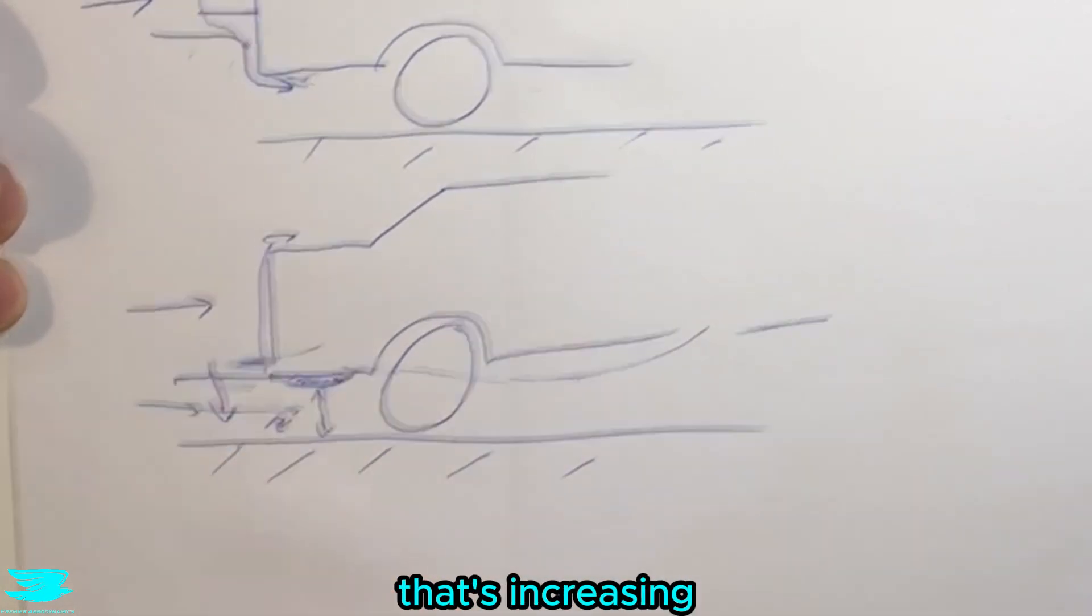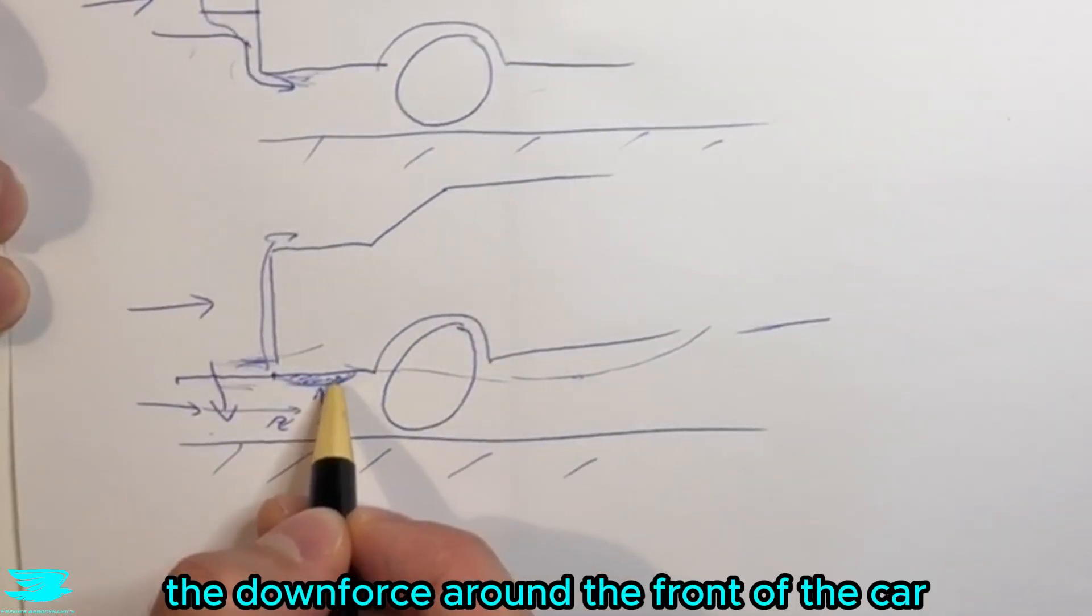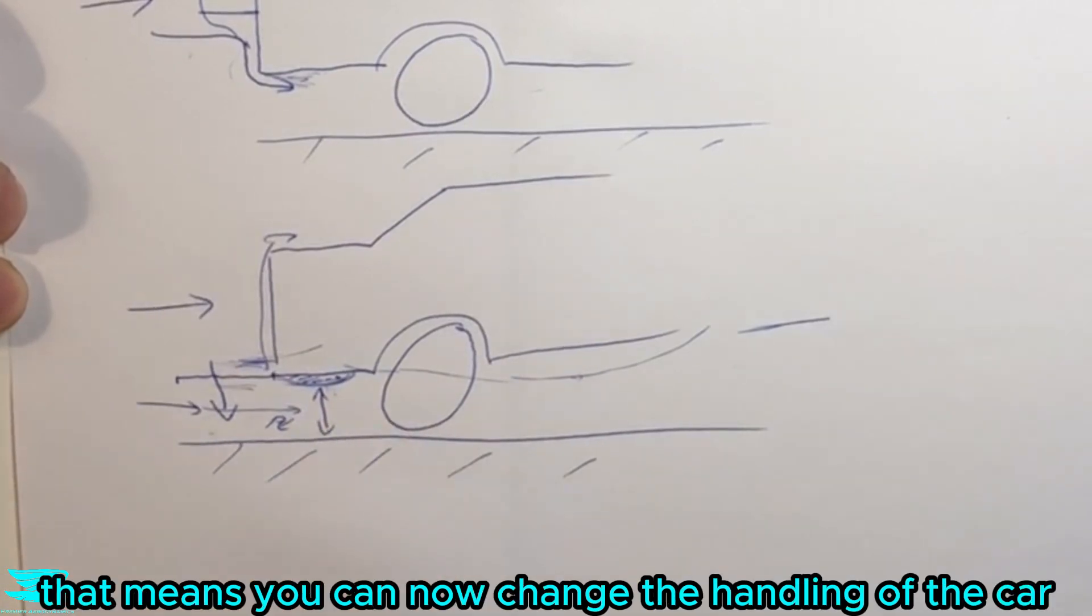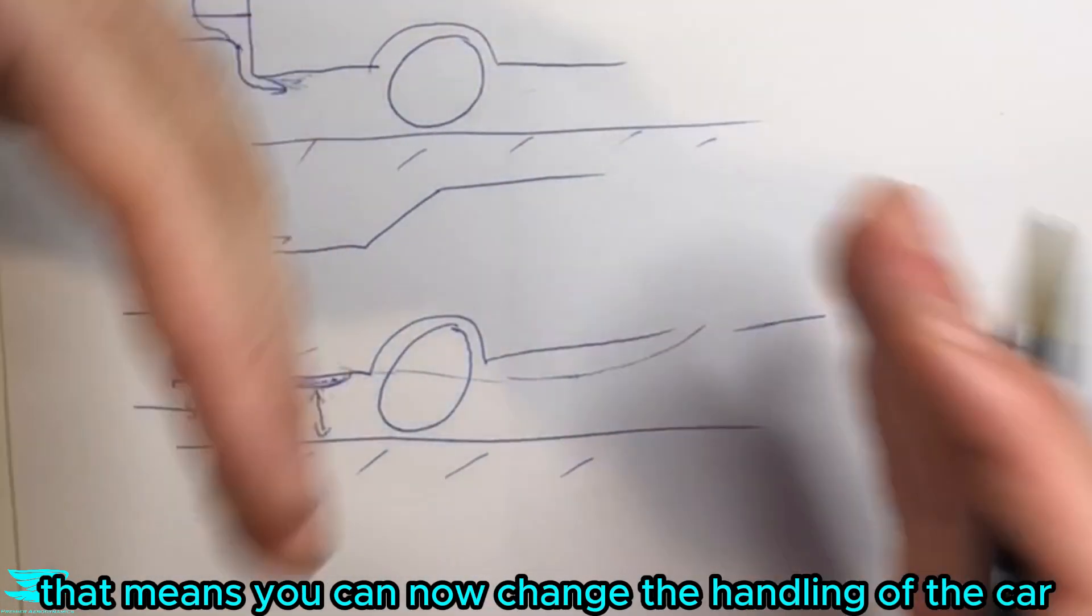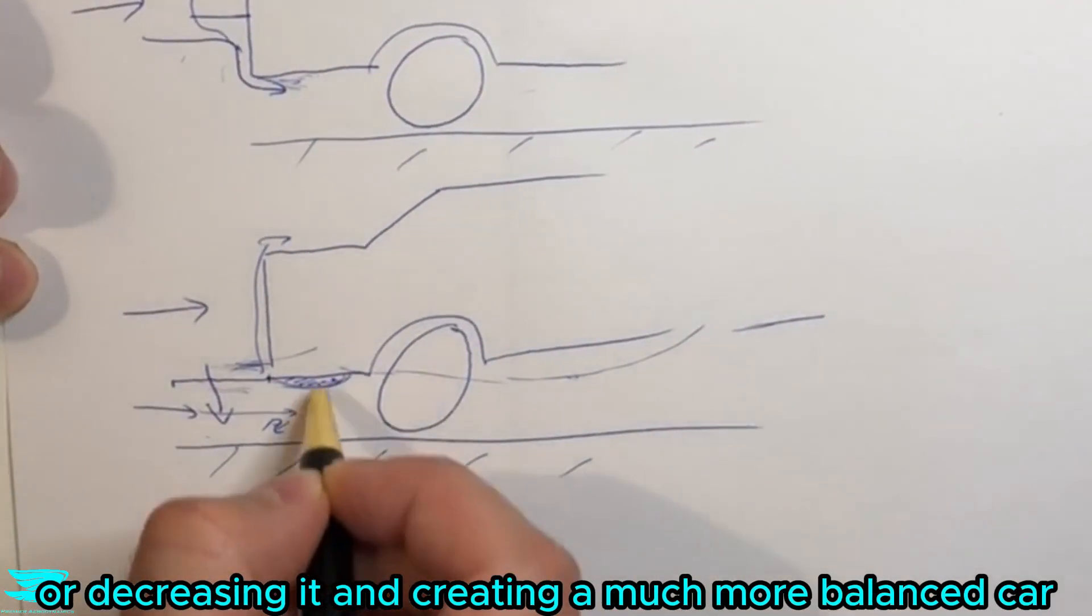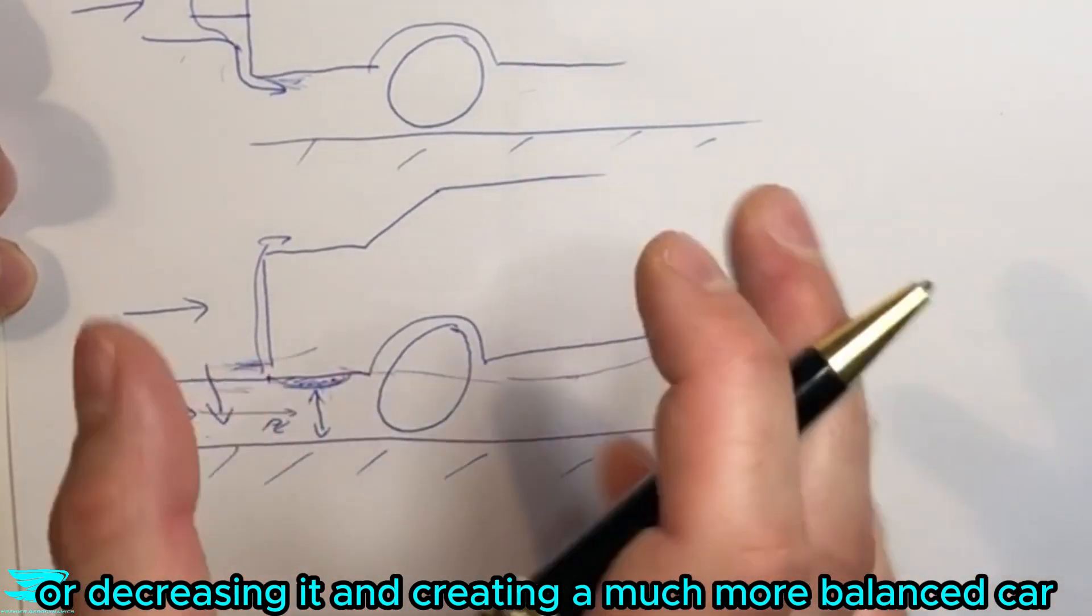With these two contraptions, these two regions here, that's increasing the downforce around the front of the car. So that means you can now change the handling of the car by either increasing the amount of downforce here, or decreasing it, and creating a much more balanced car.